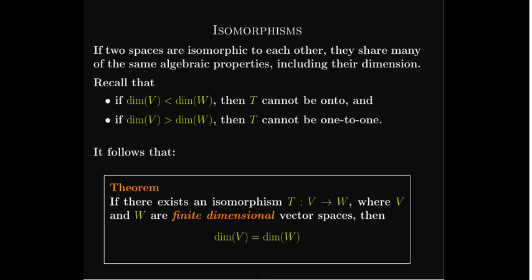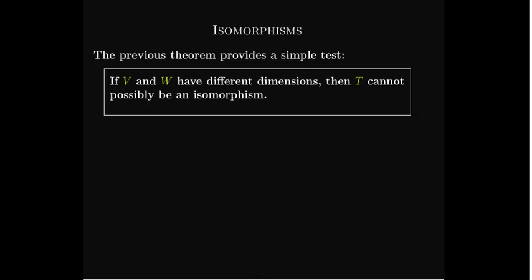So if we have an isomorphism between two finite-dimensional vector spaces, then the dimensions must equal each other. This gives us a very simple test: if V and W — our domain and codomain — have different dimensions, then the transformation cannot be an isomorphism.